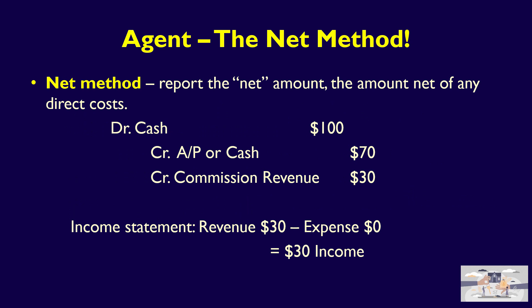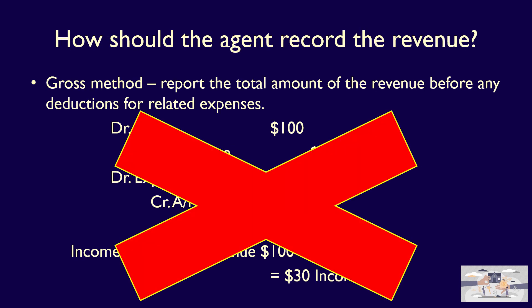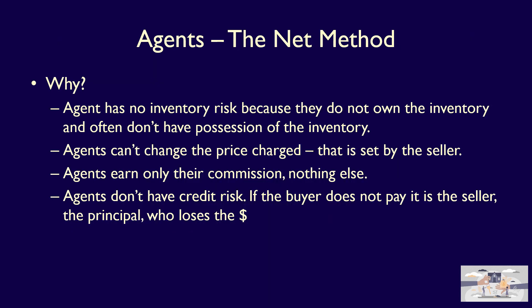If an entity is acting as an agent, they must use the net method to record the sale. An agent is never permitted to use the gross method to record revenue — never. Remember that there are four indicators that an entity is acting as an agent: no inventory risk, can't change the price, earns only the commission, and has no credit risk. You'll have to remember these indicators in a test or exam because you have to be able to recognize which entity is the agent and which is the principal.